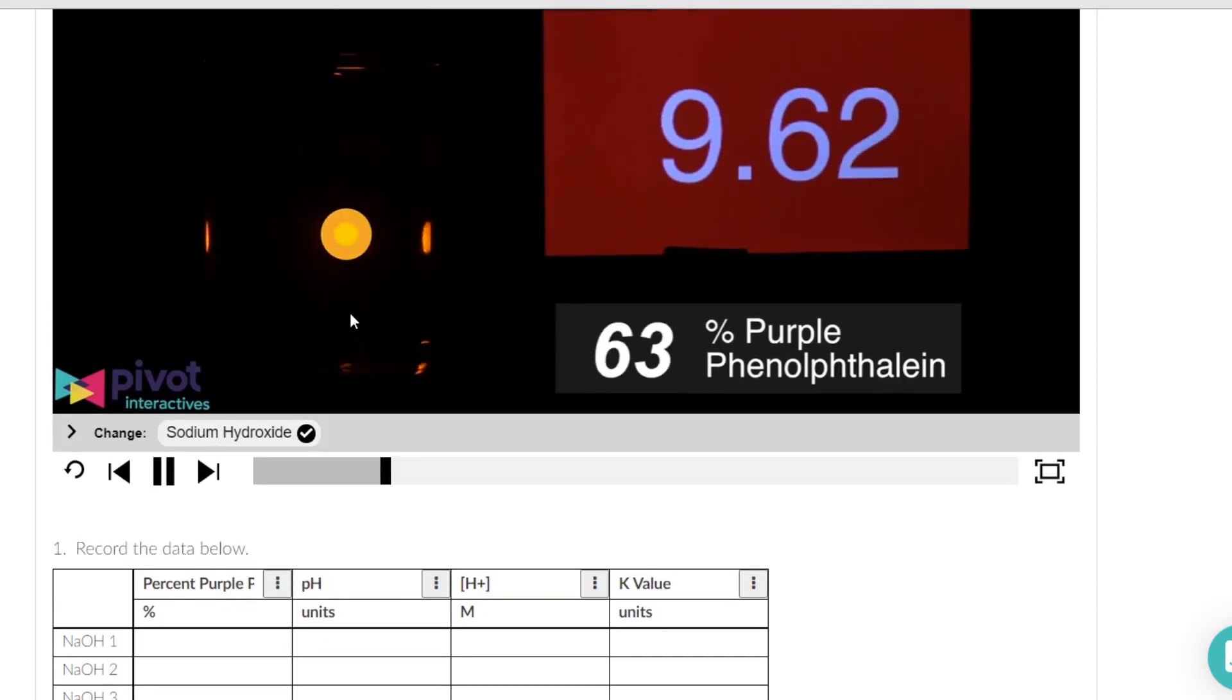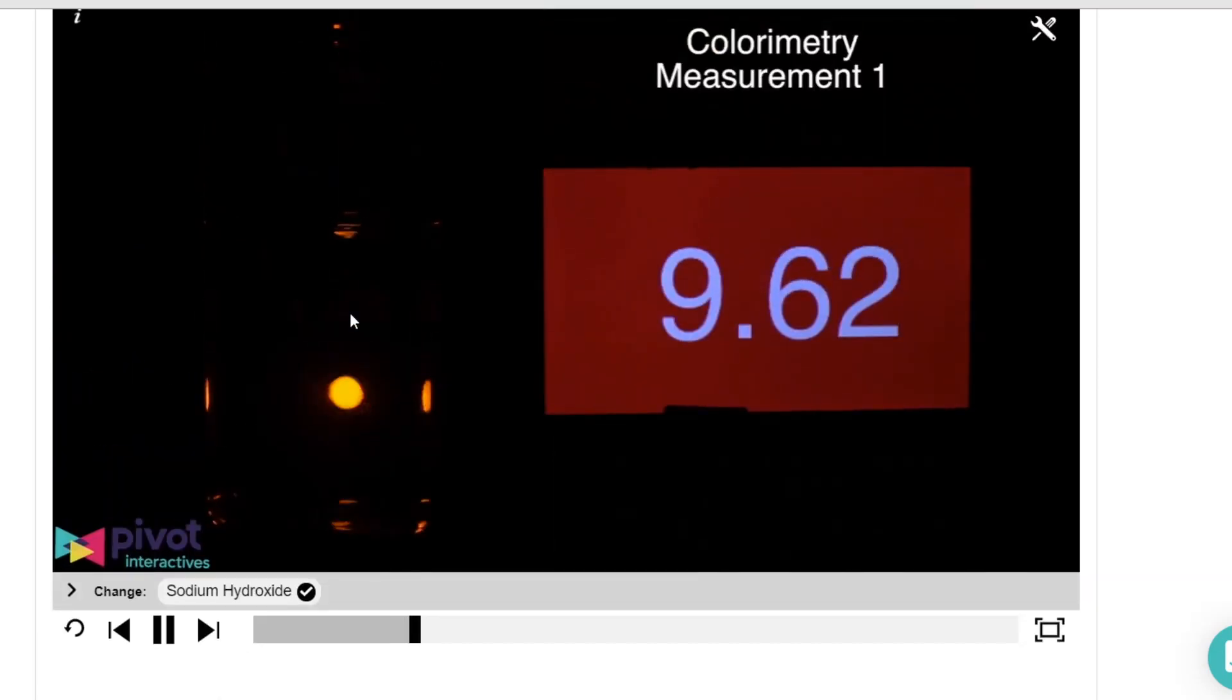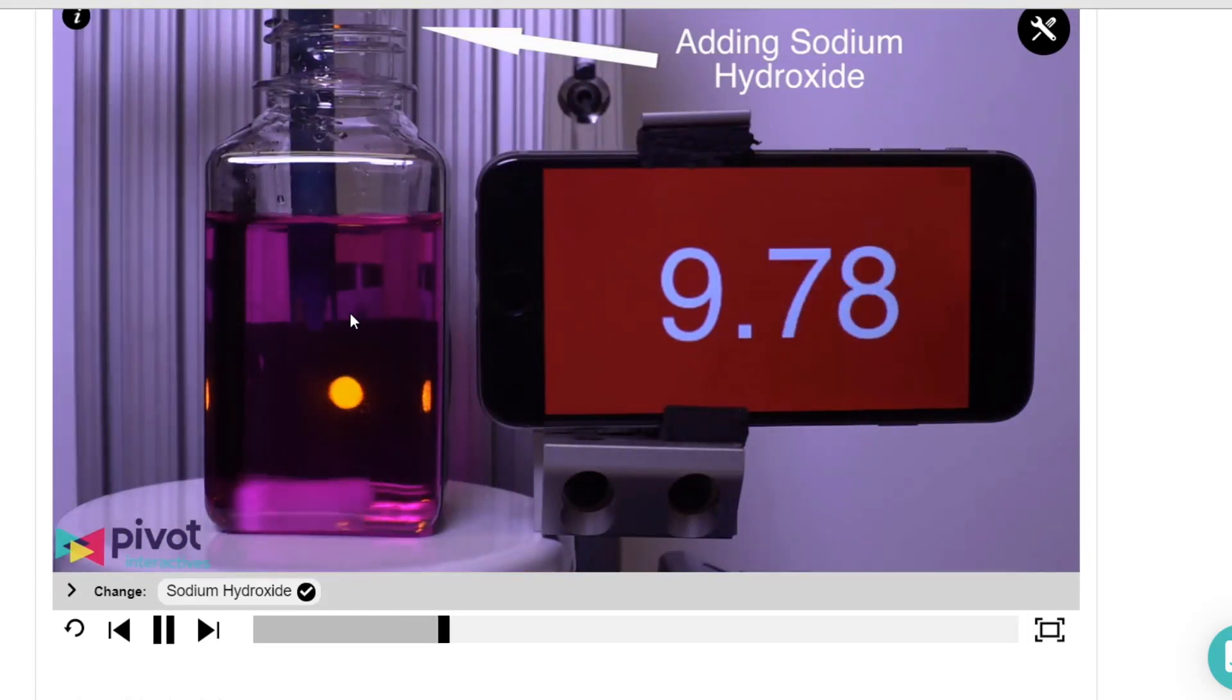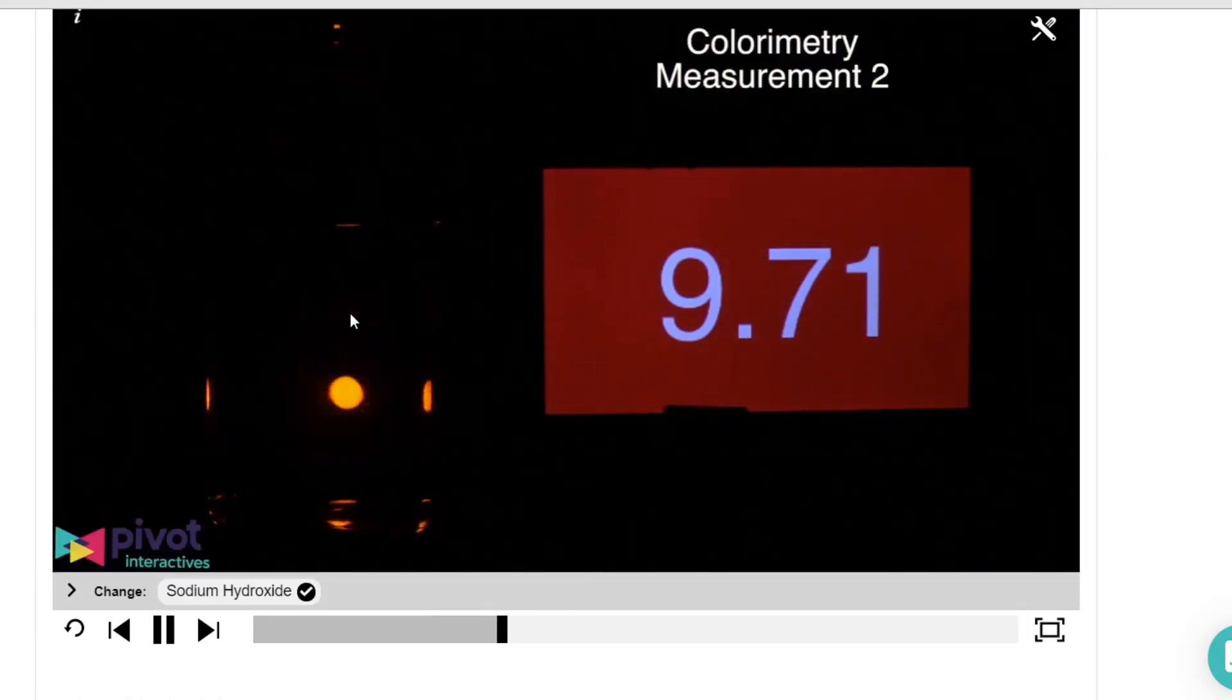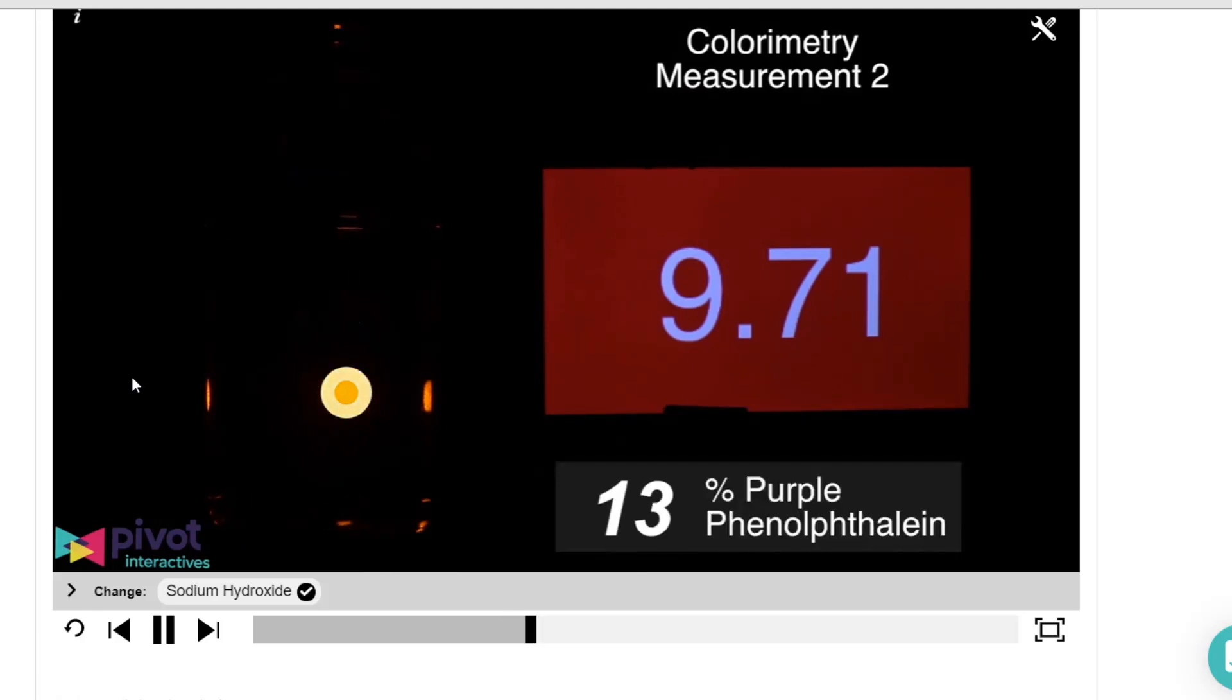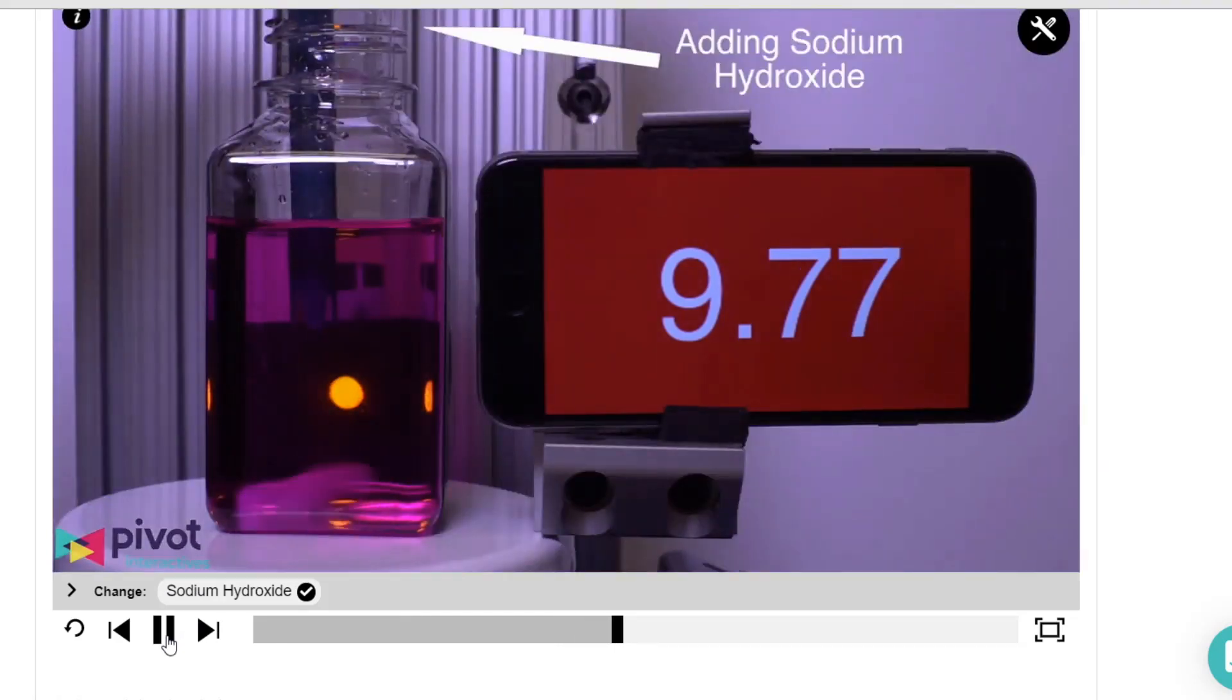As the video keeps going, they add some more. This time the pH changes some more. It goes dark, and again, you have to stop it when the colors are approximately the same. And this time 62% of it is left. So they'll take you through a couple different trials so that you can record the data.